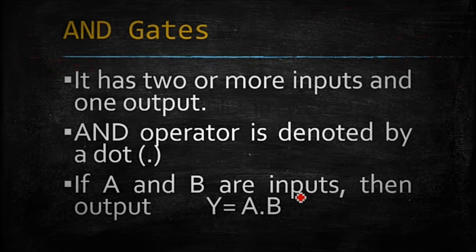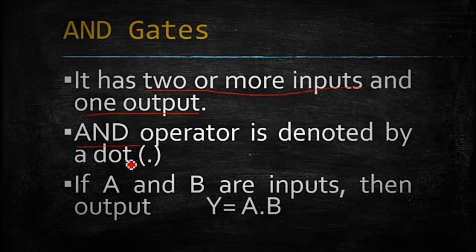AND gate. It has two or more inputs and one output. AND operator is denoted by dot and its equation is Y equals A dot B or Y equals A and B.